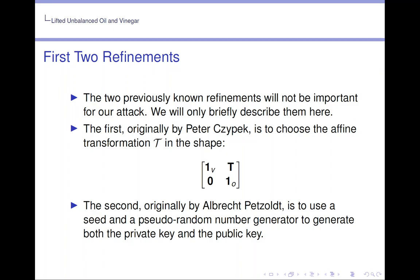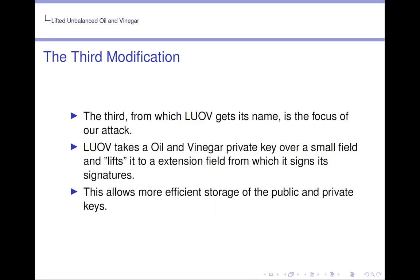The second, originally by Albrecht-Petzoldt, is to use a seed in a pseudo-random number generator to generate both the private key and the public key. The third, from which LUOV gets its name, the third modification, is the focus of our attack.